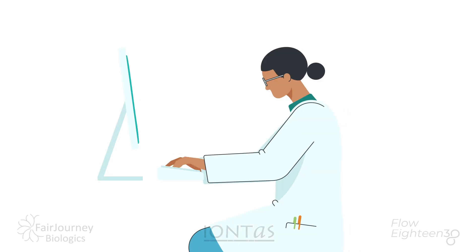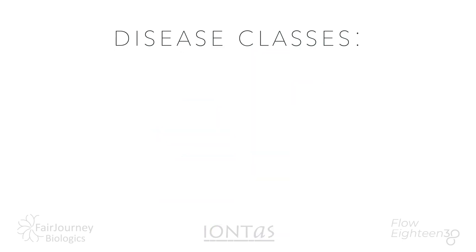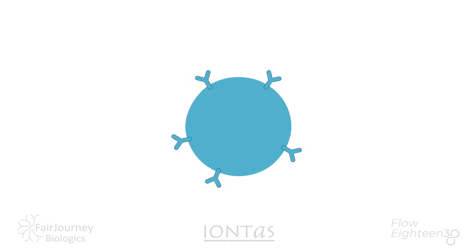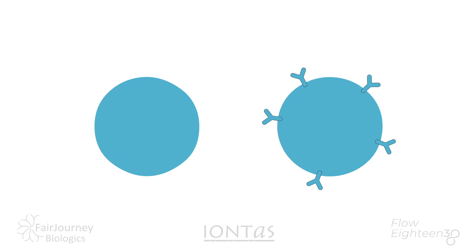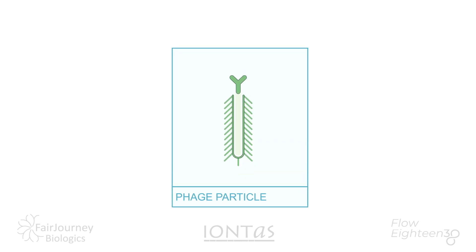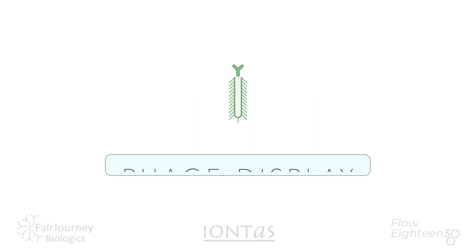Biotechnologists have harnessed the capability of antibodies to develop treatments against a variety of disease classes, including cancer, autoimmune diseases such as arthritis, and viral infections. The genes which encode antibodies can be manipulated outside of the body to make effective treatments. It is possible to isolate human antibody genes to almost any target, using a bacterial virus called a phage as a workhorse to create vast libraries of antibodies. This powerful technique is called phage display.